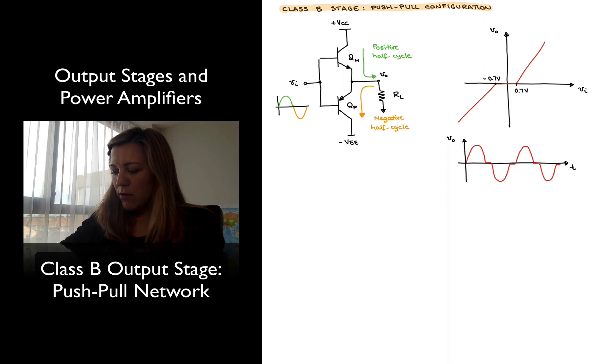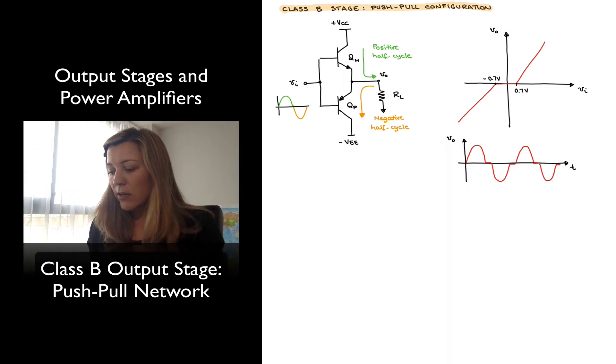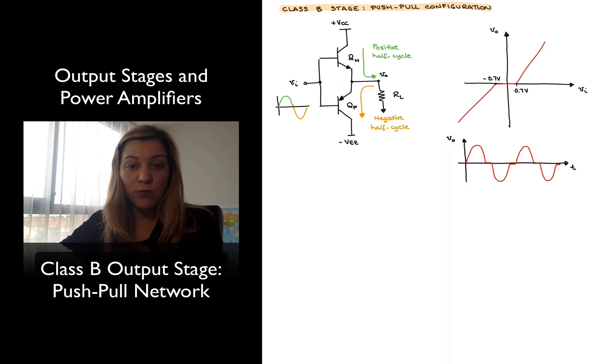So we can also represent that via the voltage transfer characteristic, where we can see, as I have labeled on the right-hand side there, if we plot VOUT versus VIN, we can see that for positive input voltages, VIN is positive, or VOUT, excuse me, is positive, and so there's a positive slope there. And for negative input voltages, VOUT is negative, so essentially it follows VIN.